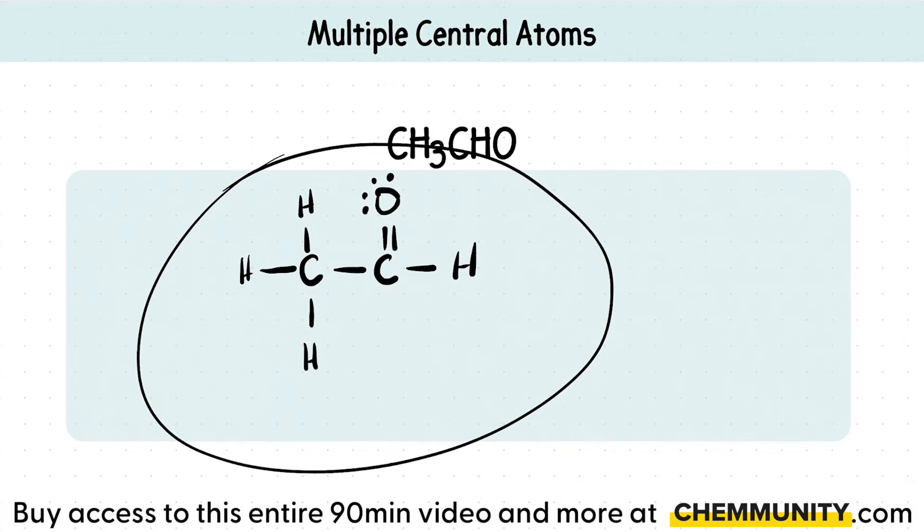But this would be the correct structure. I know that because everything follows the octet rule that it should. This carbon now has four bonds, or a total of eight valence electrons. Here's two, four, six, and eight.